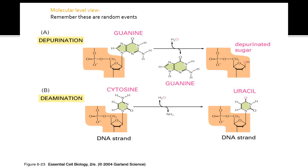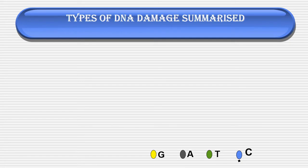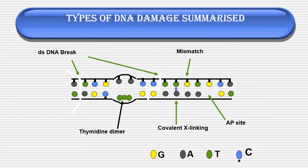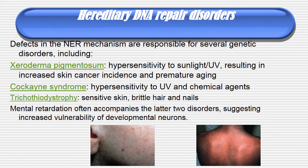Depurination and deamination are shown clearly: the depurinated sugar leads to production of uracil in the place of guanine, then cytosine, and production of uracil in place of cytosine. The types of DNA damage are summarized in this figure — the damages are double-stranded DNA break, mismatch, adenine and purine sites, thymidine dimer, covalent cross-linking, and single strand break.